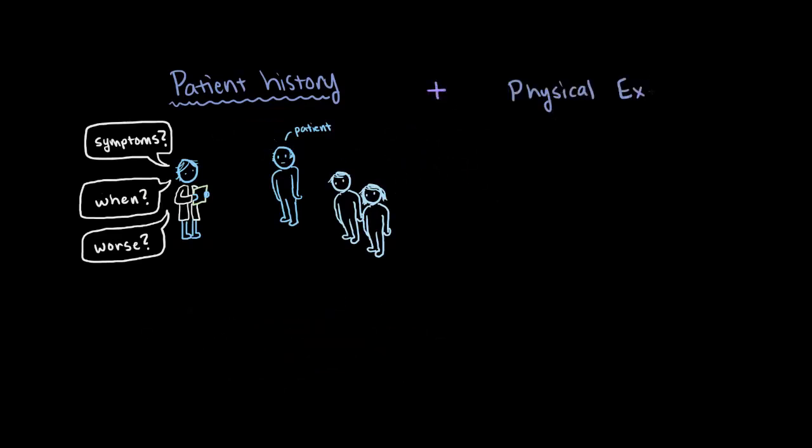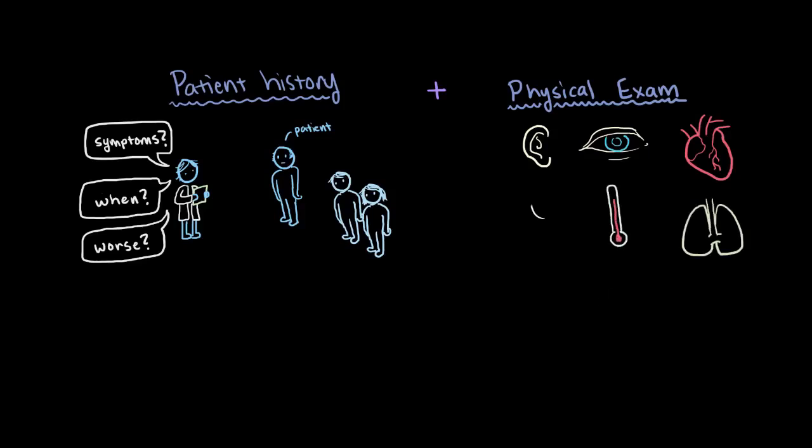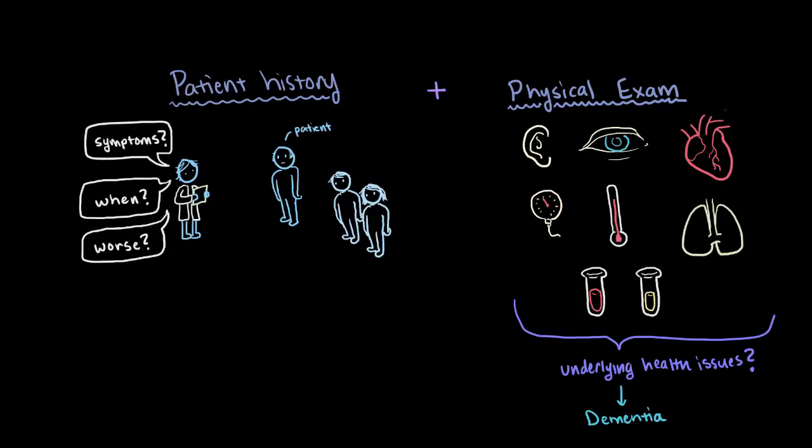So a physical examination can also be done. In these, your doctor will check things like your hearing or your eyesight, your heart and your lungs, your temperature, your blood pressure, and your pulse. And they may also take things like blood and urine samples. Information from these can help the doctor figure out if there are any other underlying health issues that are causing or contributing to the dementia itself, like heart problems and vascular dementia.